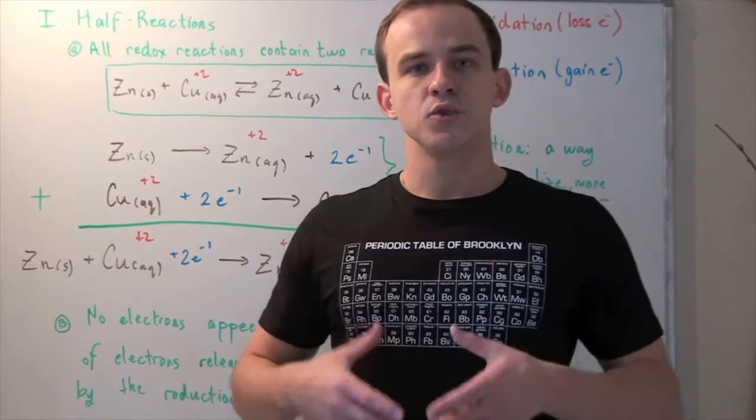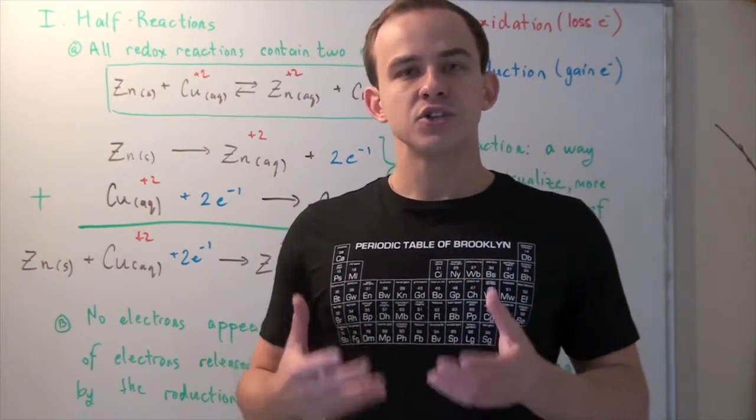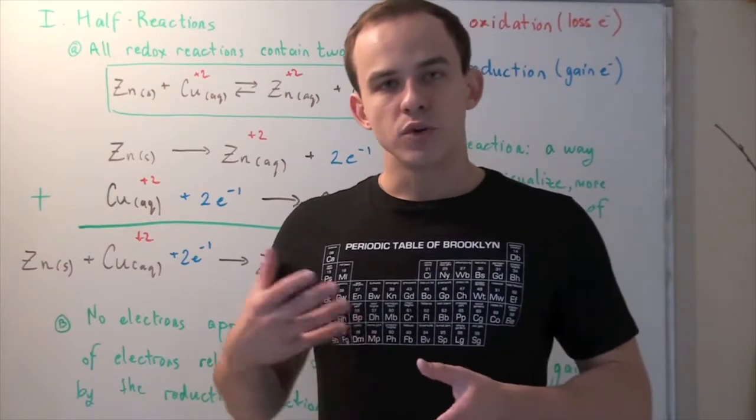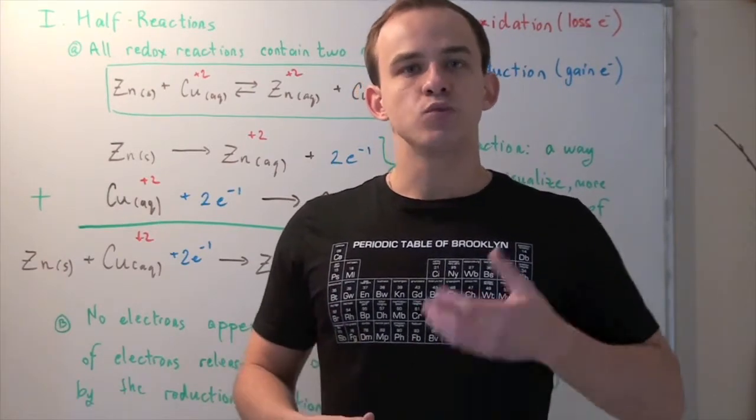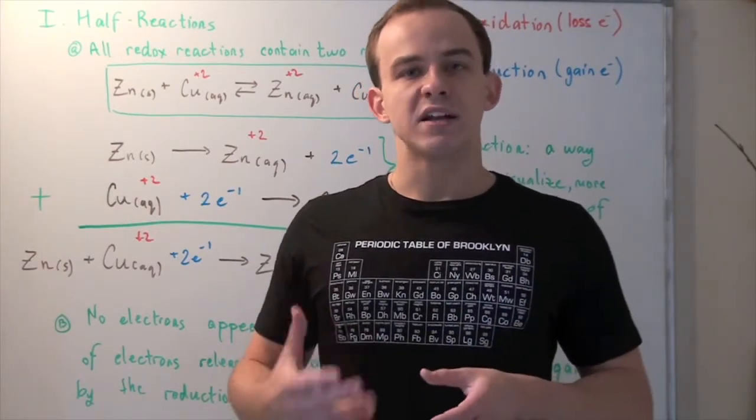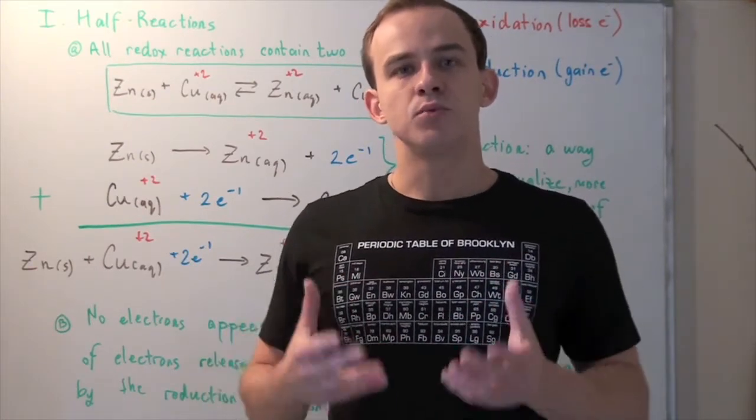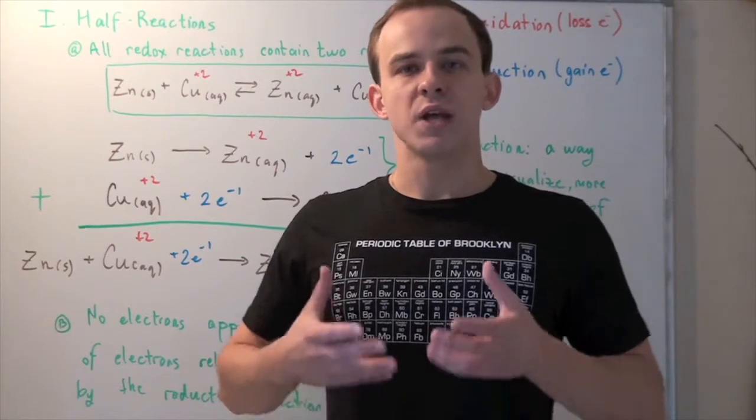Recall that redox reactions are chemical reactions that involve the transfer of electrons from one atom to another atom. This means one atom is oxidized and one atom is reduced. So any redox reaction can be broken down into two types of reactions.